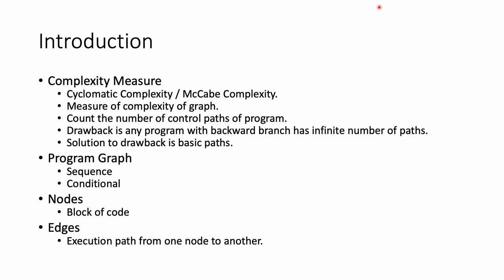Before going further, let's define some key terms. A program graph is a directed graph in which nodes are either entire statements or statement fragments. This program graph can be sequential or conditional. In sequence, the edge goes from one node to another; in conditional, the paths branch apart but merge together at the end. Nodes are entire statements or statement fragments — basically a block of code. Edges are the execution paths from one node to another.